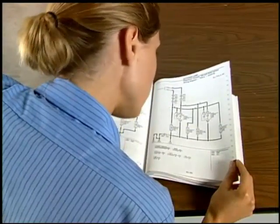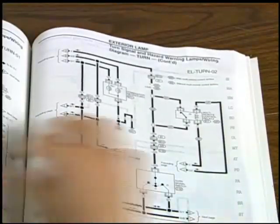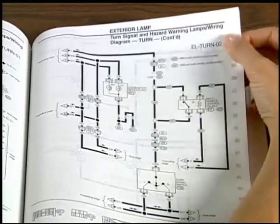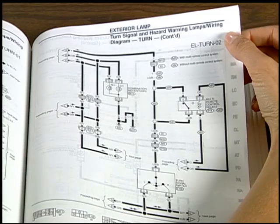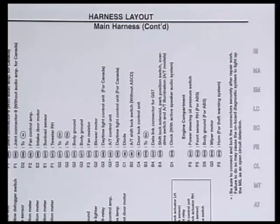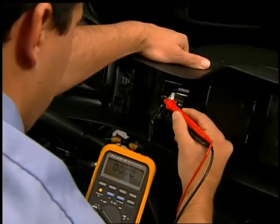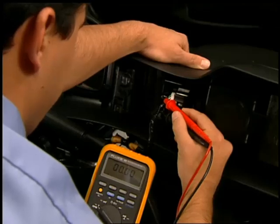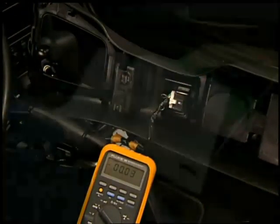As we saw in the earlier video, this section will help you understand the meaning of the various numbers and symbols like connector codes, ground points and numbers, wire color codes, and connector symbols. It even shows you where wiring harnesses and components are located on the vehicle. Spending a few minutes reviewing the general information section will help you fix it right the first time.